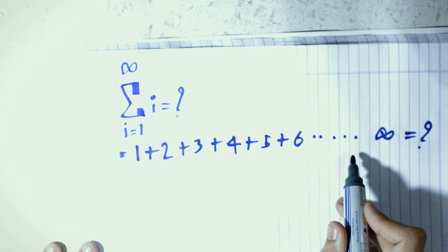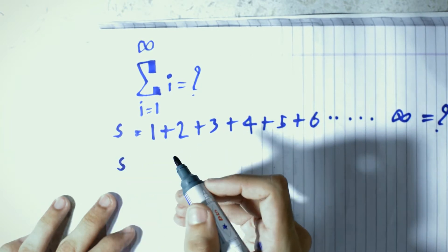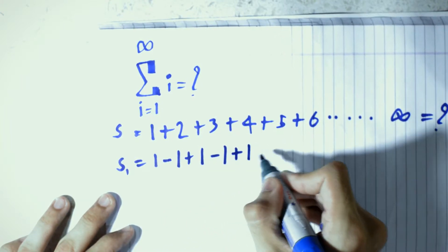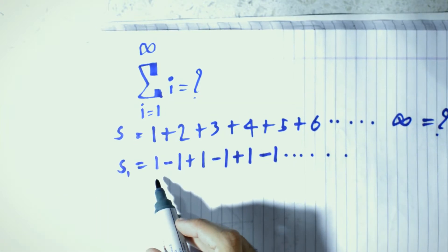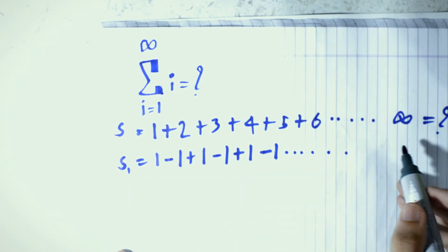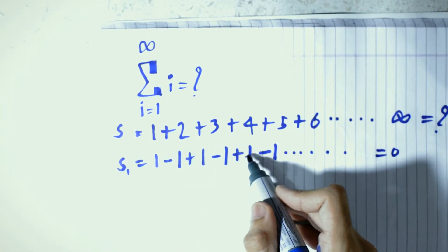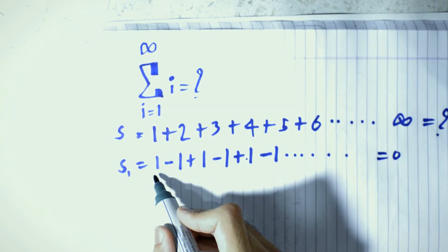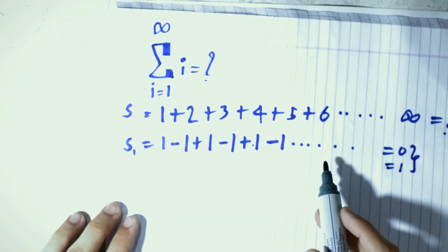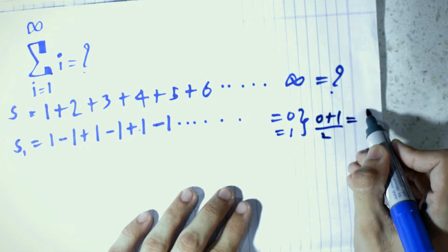Let us say that this value equals some quantity S. Now I am going to say there is another sum S1 which equals 1 minus 1 plus 1 minus 1 plus 1 minus 1 and so on. If we cancel 1 minus 1 as 0 repeatedly, the sum equals 0. But if we start cancelling differently, all numbers cancel and this equals 1. For such sums we find the average of these two numbers, which is 0 plus 1 upon 2, equals 1 by 2.